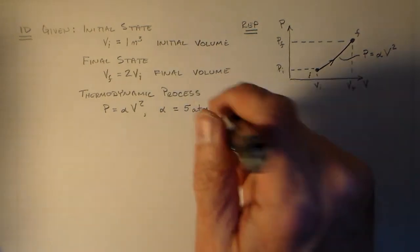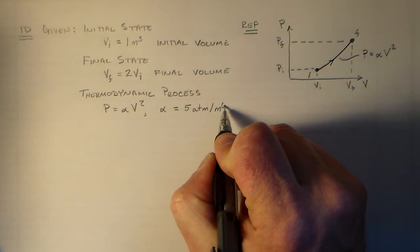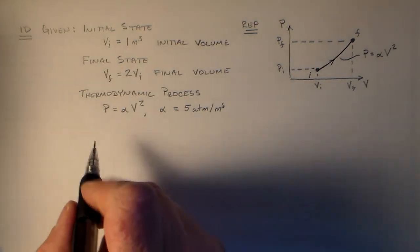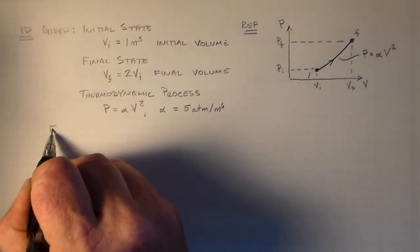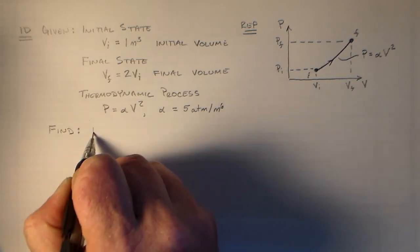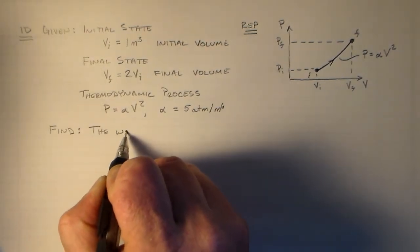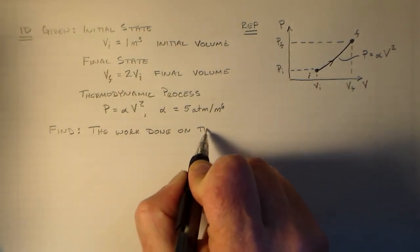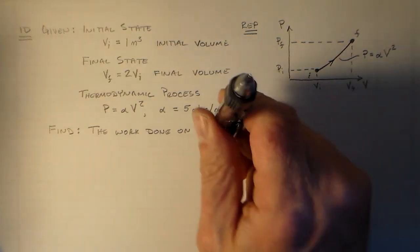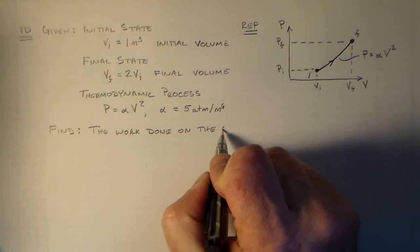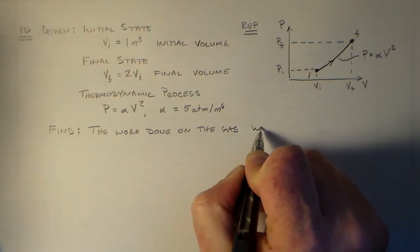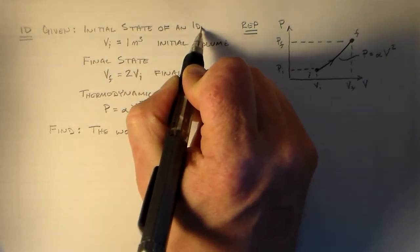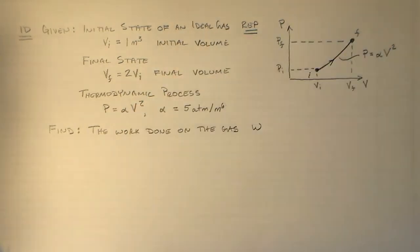So we have a thermodynamic process that has a form P is equal to alpha V squared. With the constant alpha equal to 5 atmospheres per meters cubed. Oh, excuse me, meters to the sixth. This is squared. And that, I think, is all we need to know to find the work done on the gas during the process. I should also say the initial state of an ideal gas.